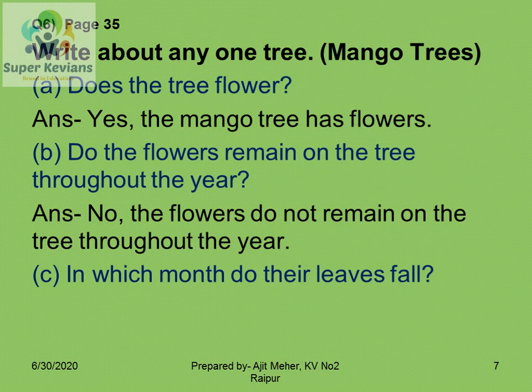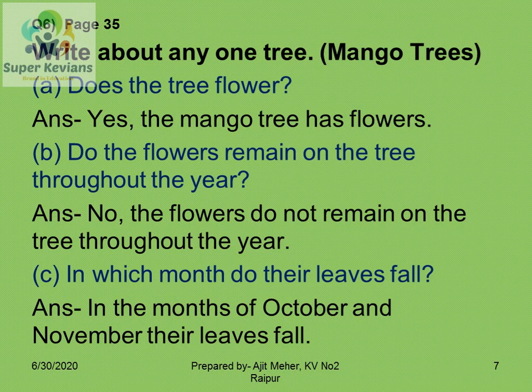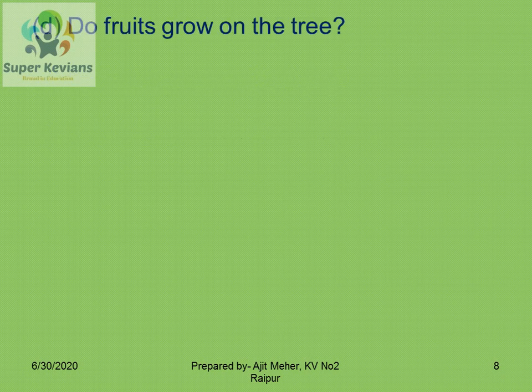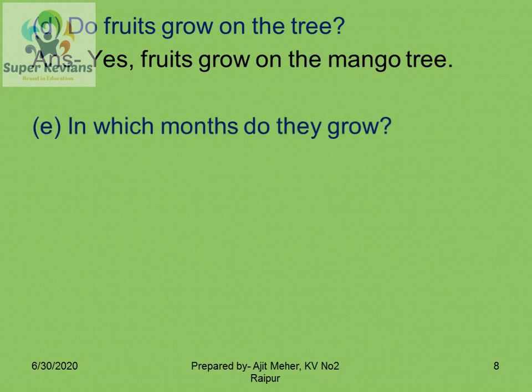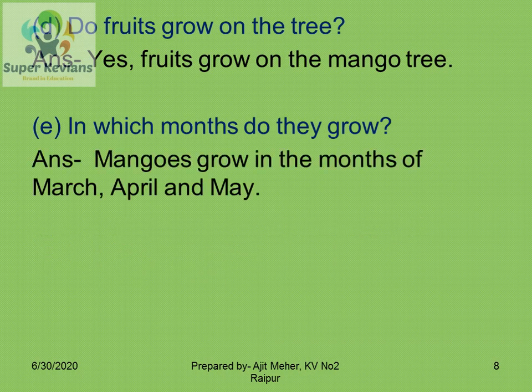In which month do the leaves fall? Generally in the months of October and November the leaves of the mango tree fall. Do fruits grow on the tree? Yes, fruits grow on the mango tree — the mango fruit, which is the king of all fruits. Generally mangoes grow in the months of March, April, and May, though this may differ in some other states.